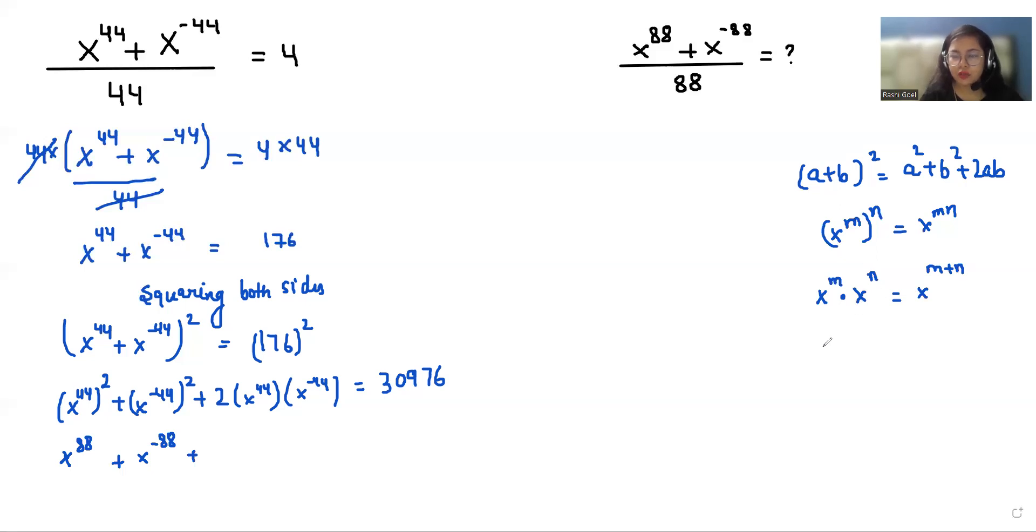So if I'm doing 2 multiply x power 44 times x power minus 44, so 2 times x power 44 plus minus 44, so 2 times x power 0. If anything has power 0 we can call it 1.